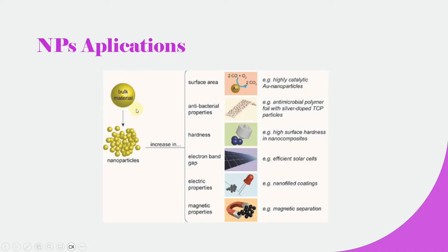When bulk material is broken down into particles so small that the size of each particle is 10 to the power minus 9 meter — that is 1 nanometer to 100 nanometers — these particles are known as nanoparticles, and they have very different properties compared to the bulk material from which they are formed.